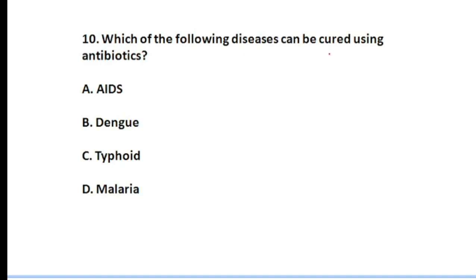Question number ten: which of the following diseases can be cured using antibiotics? The options are AIDS, dengue, typhoid, and malaria. Antibiotics mostly affect bacterial diseases. Among the options, typhoid is a bacterial disease. Therefore, question number ten, option number C — typhoid — will be the correct answer.